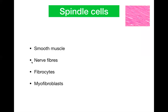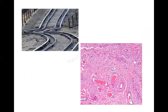The common spindle cells that we see on histology are the smooth muscle fibers, the nerve fibers, fibrocytes, and myofibroblasts. They all look relatively similar to each other because all of them will have an elongated spindly nuclei and they will have moderate to light eosinophilic cytoplasm. So is there a way by which we can differentiate these cells further? Yes, there is a way, so let us see how.